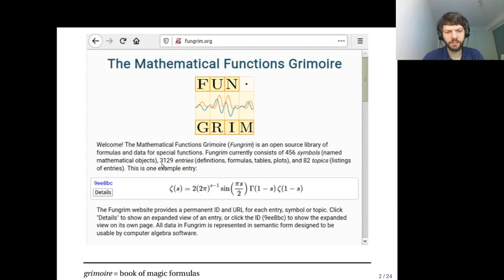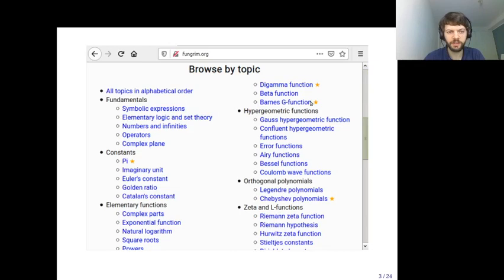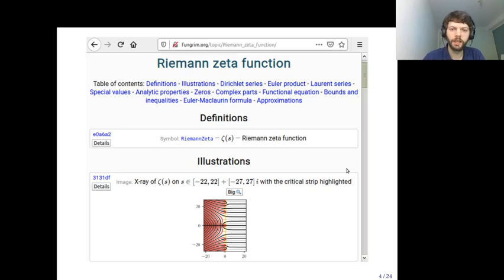Just one example is this entry for the functional equation of the Riemann zeta function. This is a screenshot of the website. If you scroll down on the entry page, you will get a list of mathematical functions. This is the beginning of the list. You can click on some link to get a topic for a function like the Riemann zeta function. This is the topic page for the Riemann zeta function.